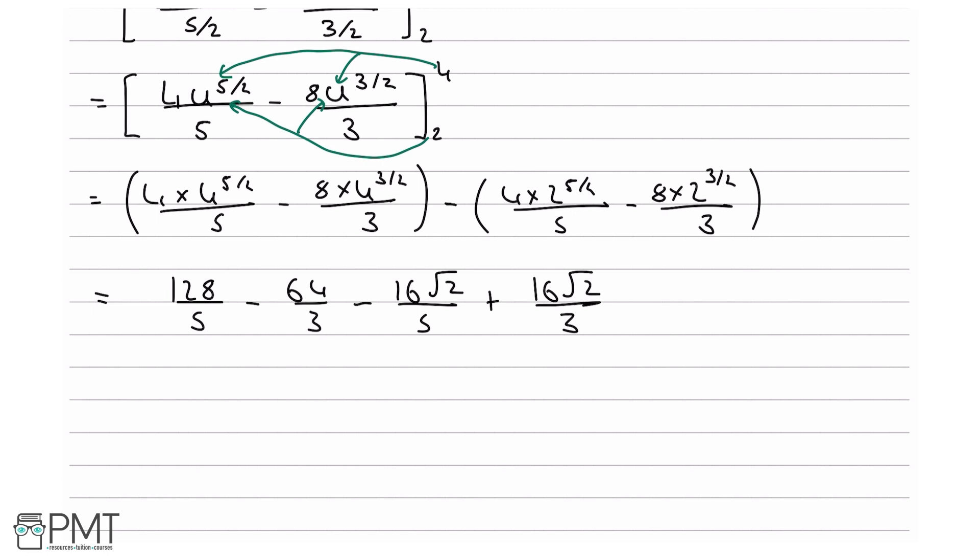Summing all these together, you will end up with 64 plus 32 root 2 over 15, and what we can do here is we can say this equals 32 times (2 plus root 2) over 15.